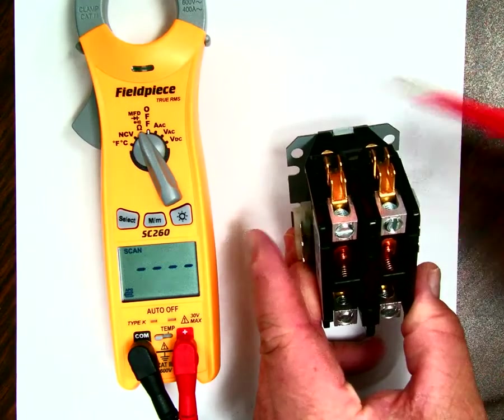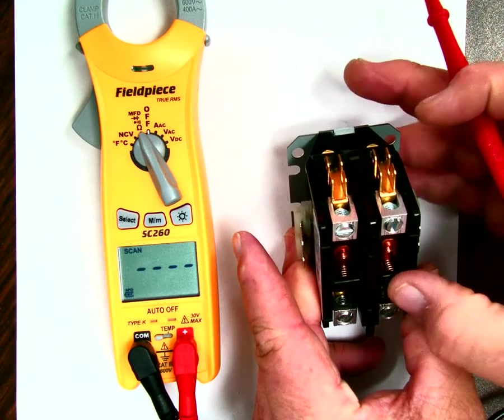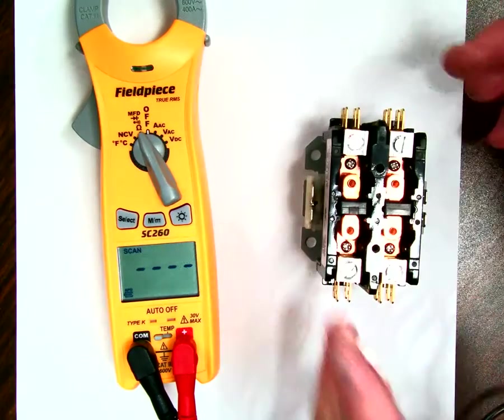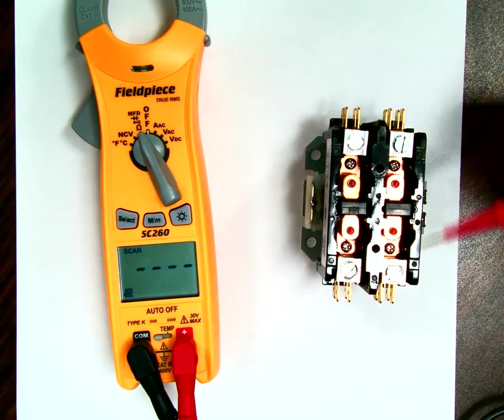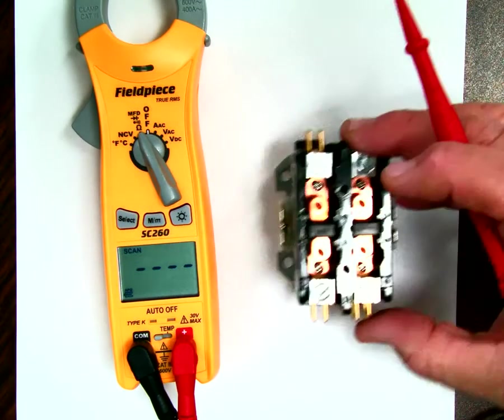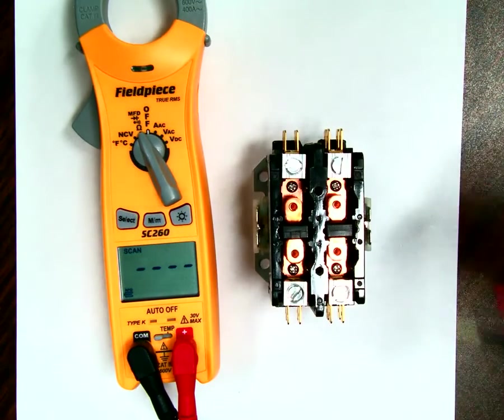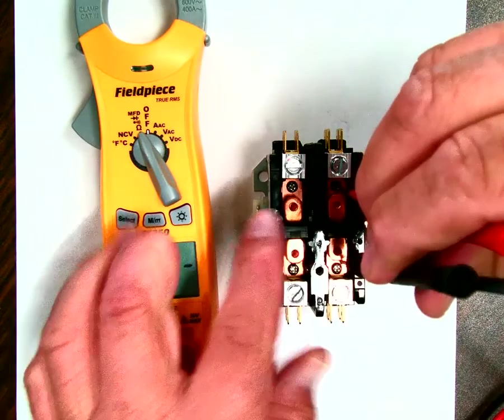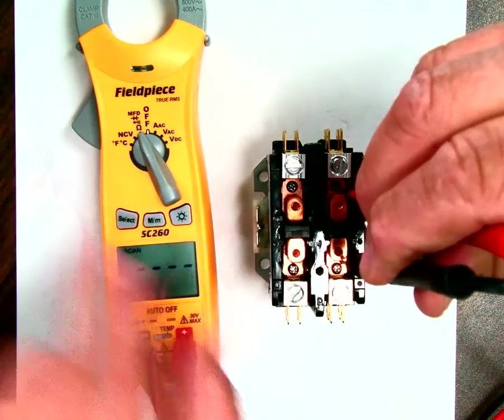When I put voltage to both sides of here, it will pull this down, which will create a continuity between these two points right there. So when I put it on here, I'm going to touch it right here. I'm going to push the plunger down and you should see the reading.